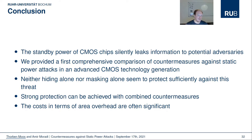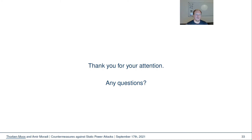To conclude, we have seen once again that the standby power of CMOS chips reveals secrets to potential adversaries. We have provided a first comprehensive comparison of countermeasures against static power attacks using a dedicated test chip in an advanced CMOS technology generation. We have learned that neither hiding nor masking alone protects sufficiently against this threat, but strong protection can be achieved using combined countermeasures — though these typically come at a significant price in terms of area overhead. Thank you very much for your attention. Questions can be asked during the live session at CHES 2021 on September 17th.